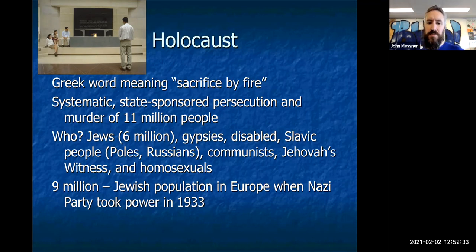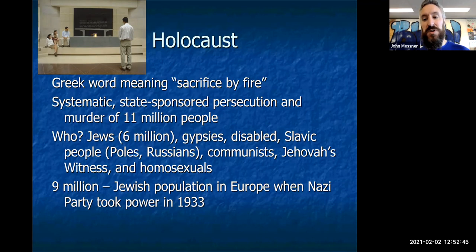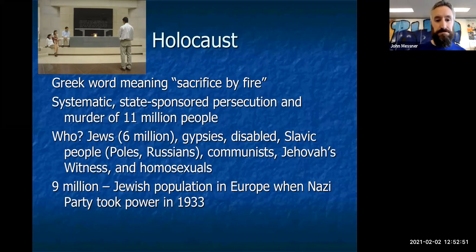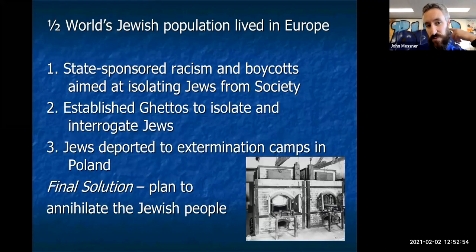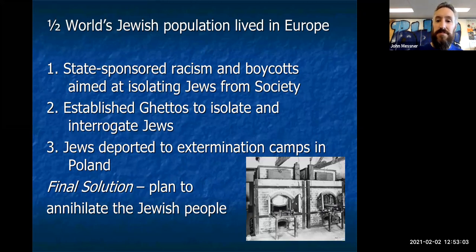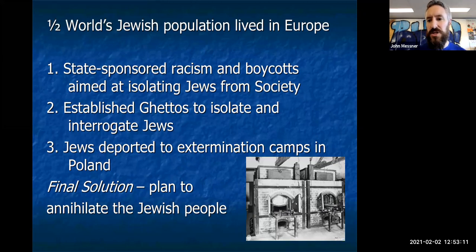Before the Nazis rose to power in 1933, there were 9 million people of Jewish ancestry living in Europe. They are going to exterminate 6 million — two thirds of all of Europe's Jewish population. At that time, half of the world's Jewish population lived in Europe, with the other half congregating in America and throughout the rest of the world. So the Nazis ultimately exterminated about a quarter of the world's Jewish population — a tremendously high number.